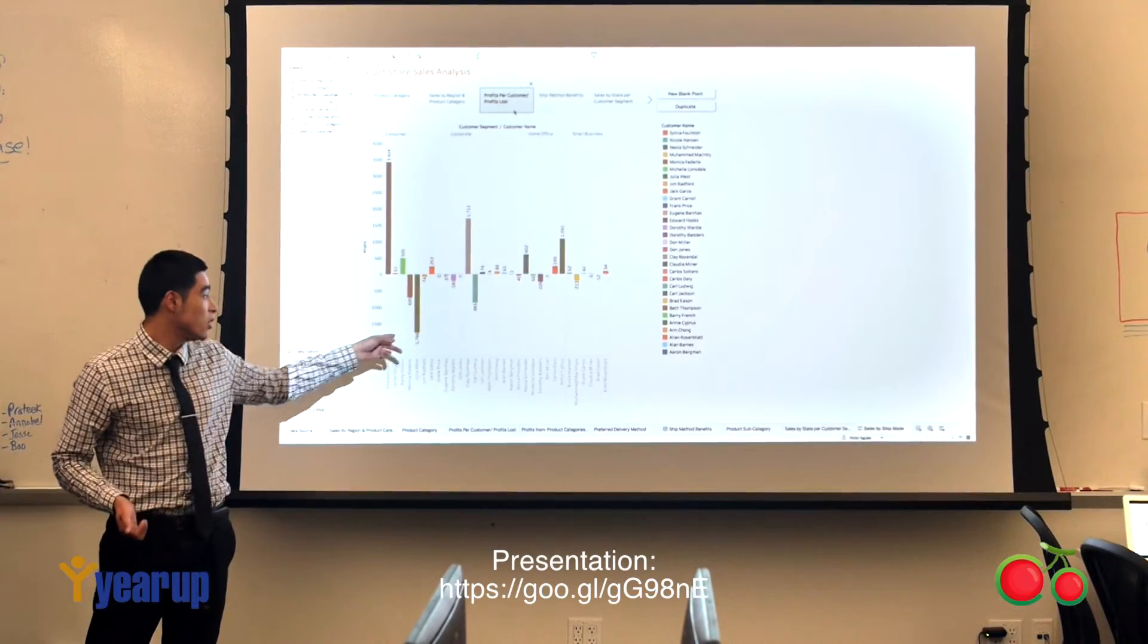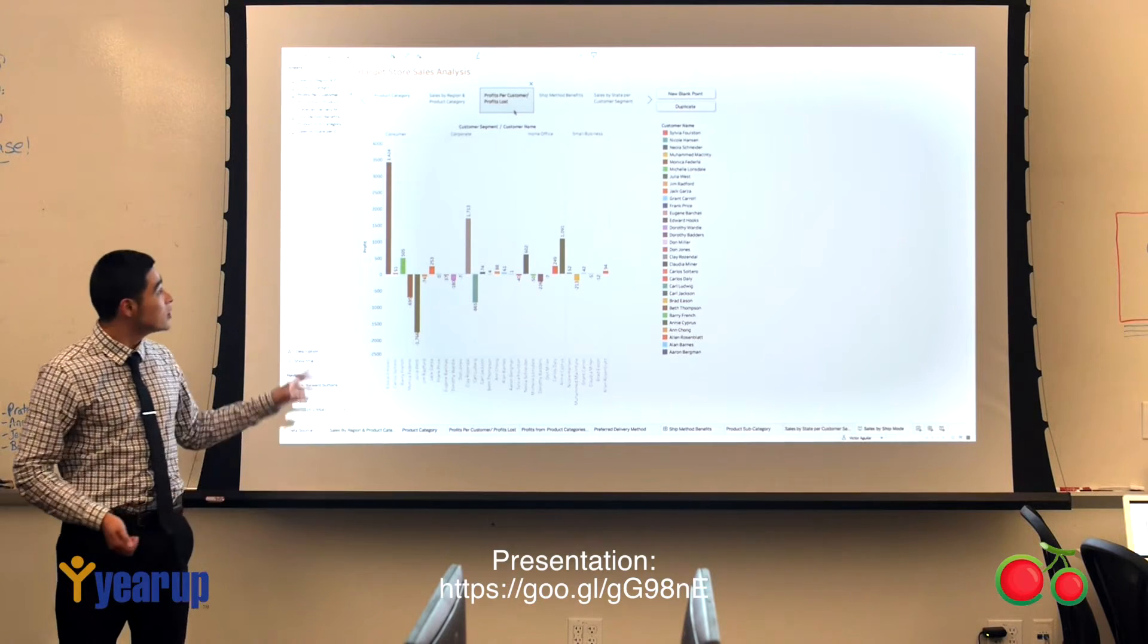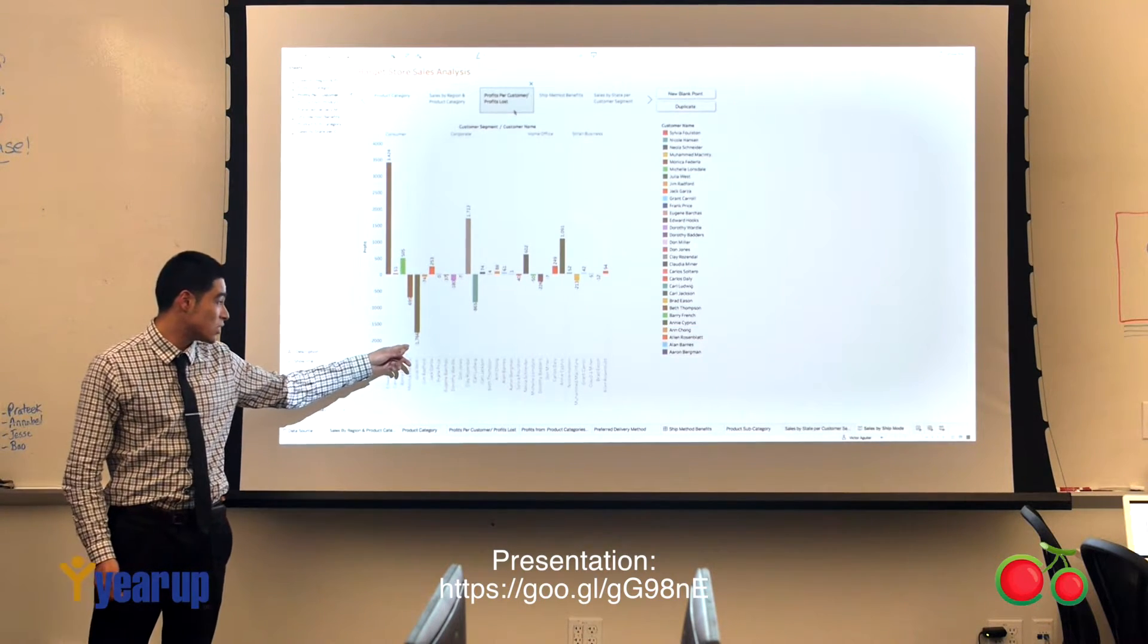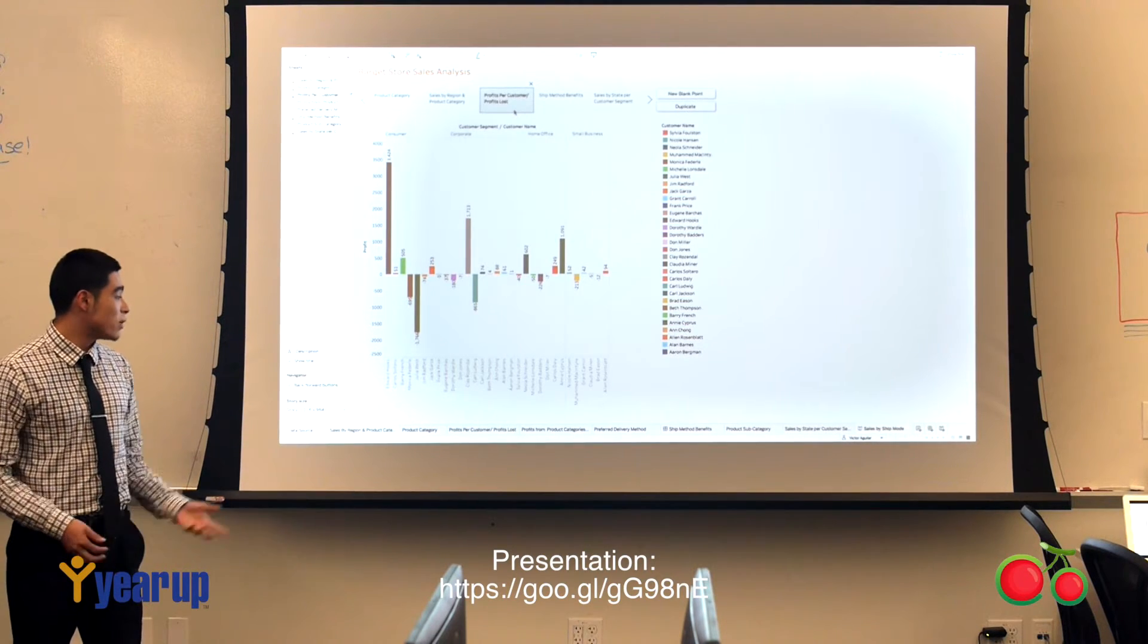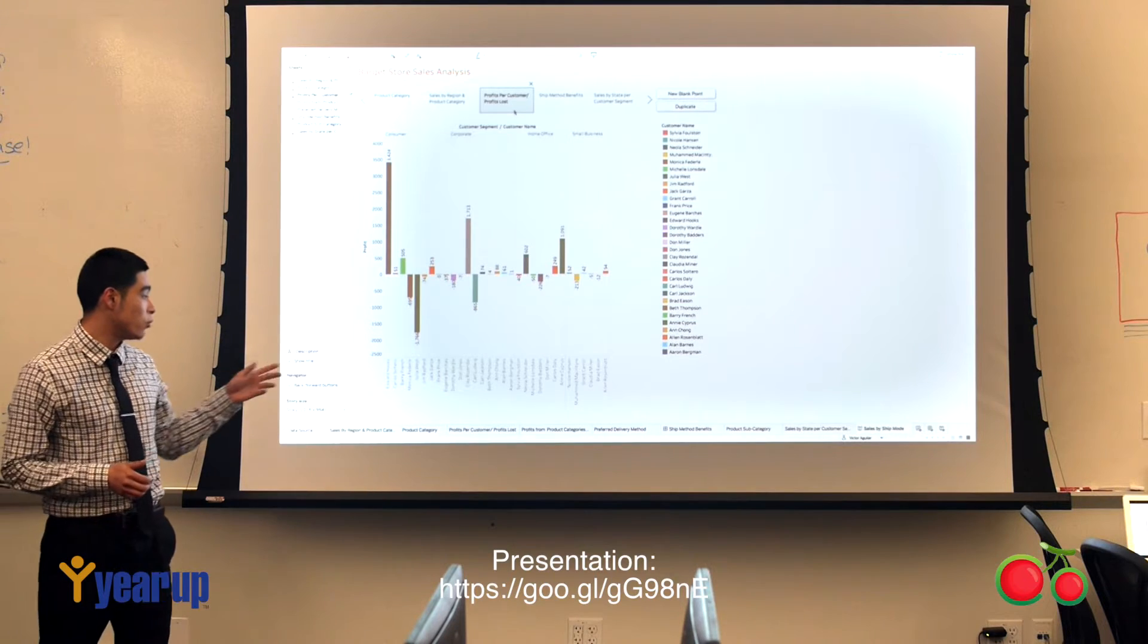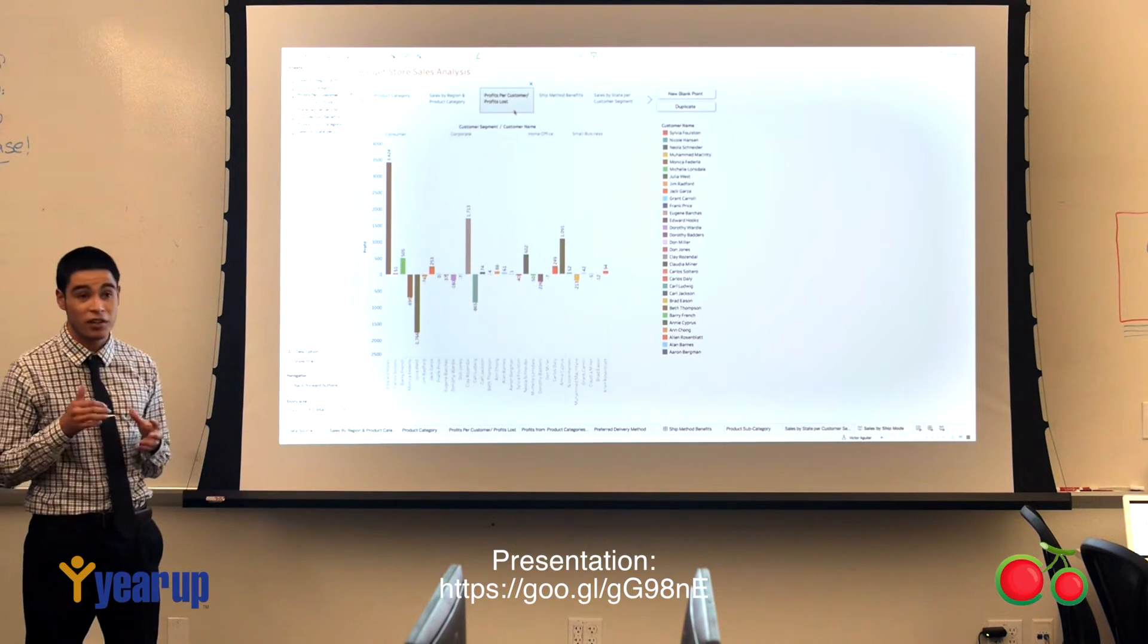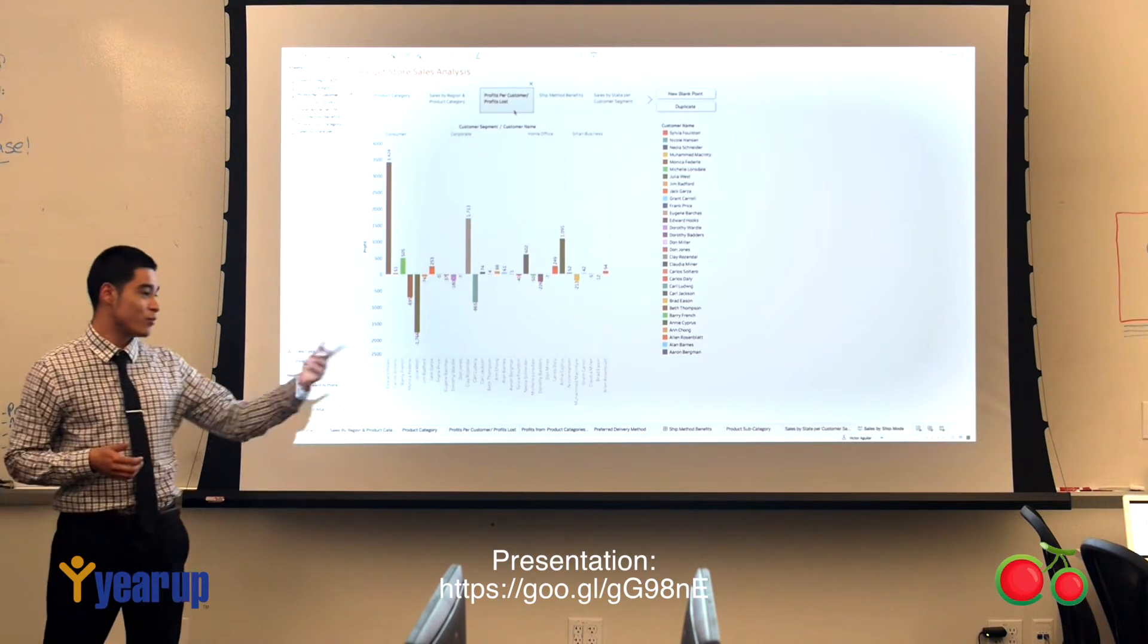We can see that in the corporate sector, we're losing tons of money. This whole section is all corporate, and it has the most losses in any other sector. We have minus $1,766, almost $2,000 worth of losses. From this analysis, we can see which customers are the ones costing us money and in which sector they're in.